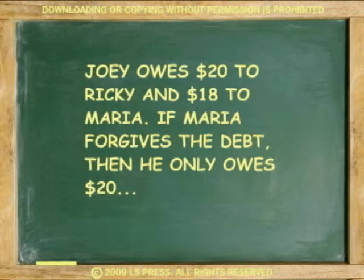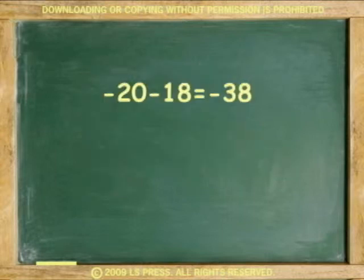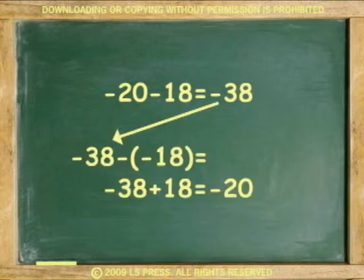Another example: Joey owes $20 to Ricky and $18 to Maria. If Maria forgives the debt, then he only owes $20. The equations to show this are: negative 20 plus negative 18 equals negative 38 — $38 is what he owes. If one debt is forgiven, take away the negative: negative 38 minus negative 18 equals negative 38 plus 18 equals negative 20.